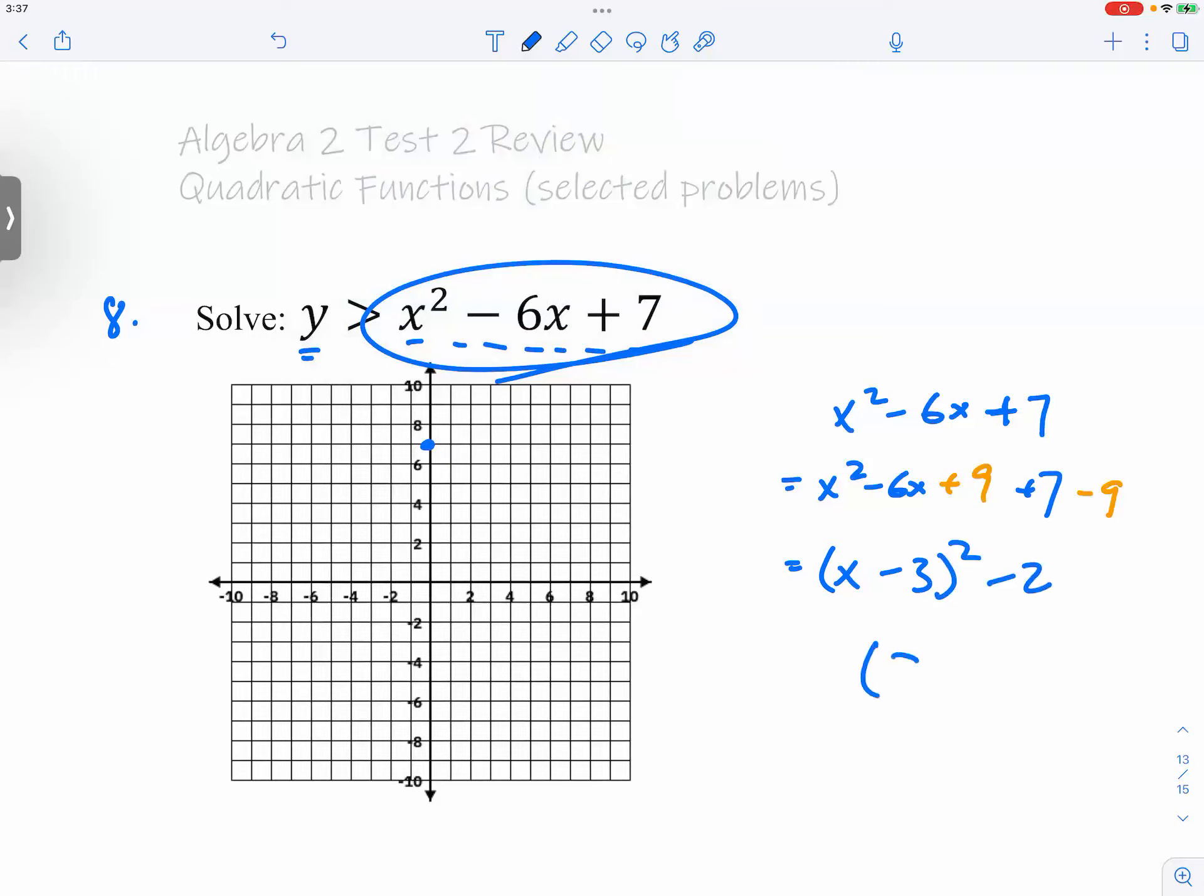...which in this case would be (3, -2). Once you get the vertex form, you can make a graph using 1, 3, and 5. In this case, 1, 3, 5 would be sufficient and you have your graph like this.